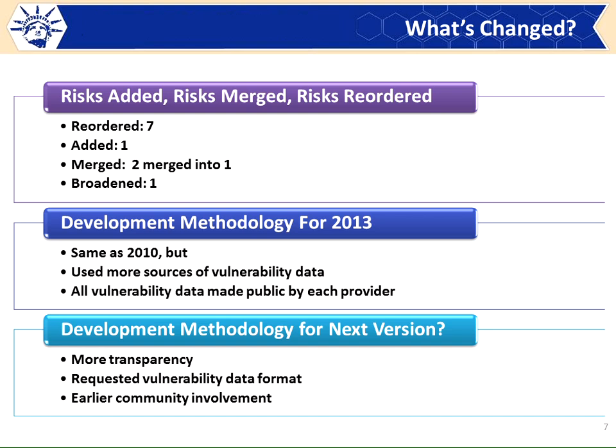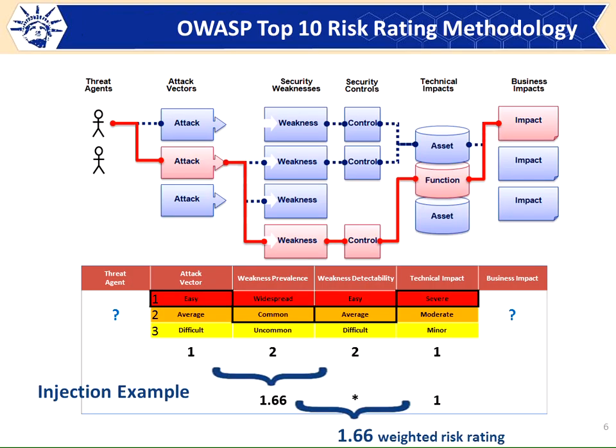We did get a couple more vulnerability providers — I think we went from four to six or seven. For the next time the methodology will involve more participation and an open call for data. We even tried to use weakness exploit likelihood as a factor this time. I said to the people who suggested it, you three go do some work and let me know what you come up with, and if it's good I'll include it. Radio silence. But hopefully next time we'll get involved early enough that some people will be willing to step up. If no one steps up, maybe nothing will happen again, but we're at least going to do the open call for data — that's definitely going to be a change.